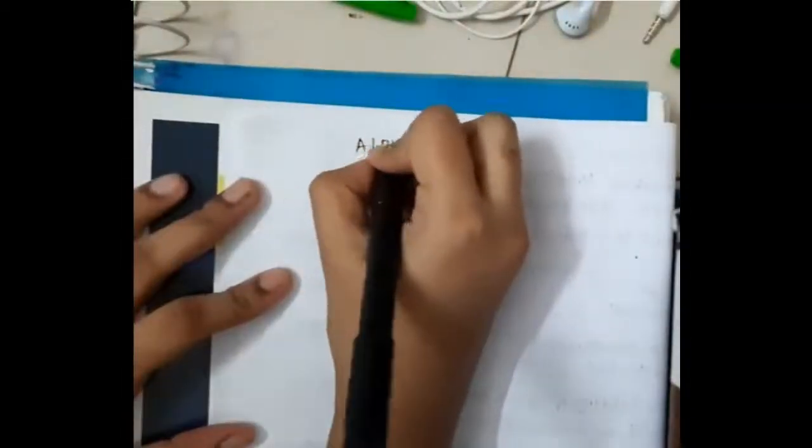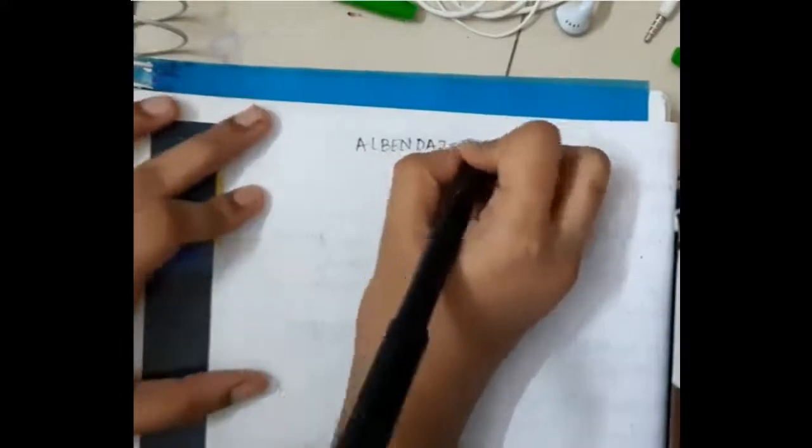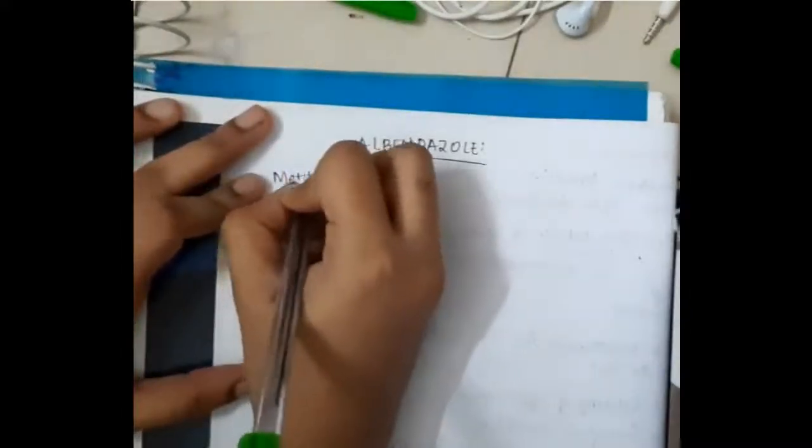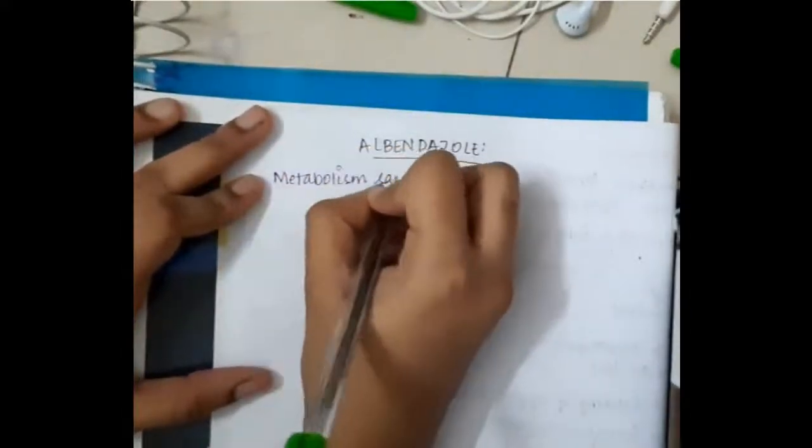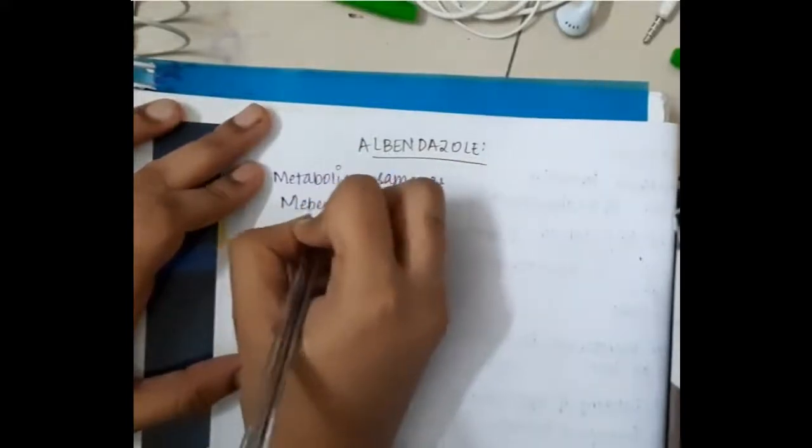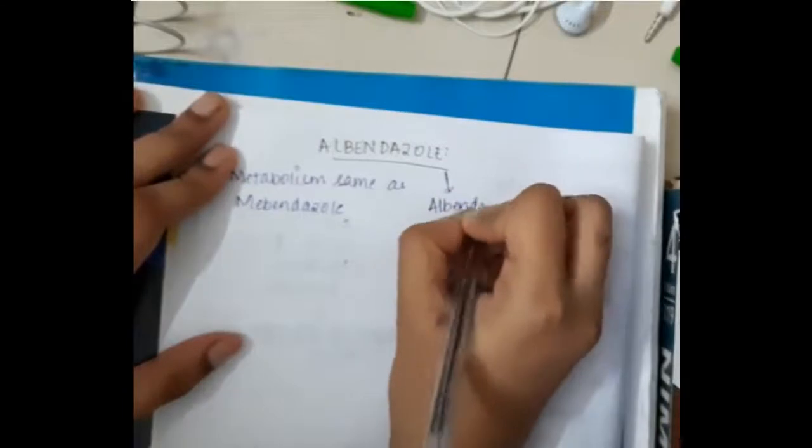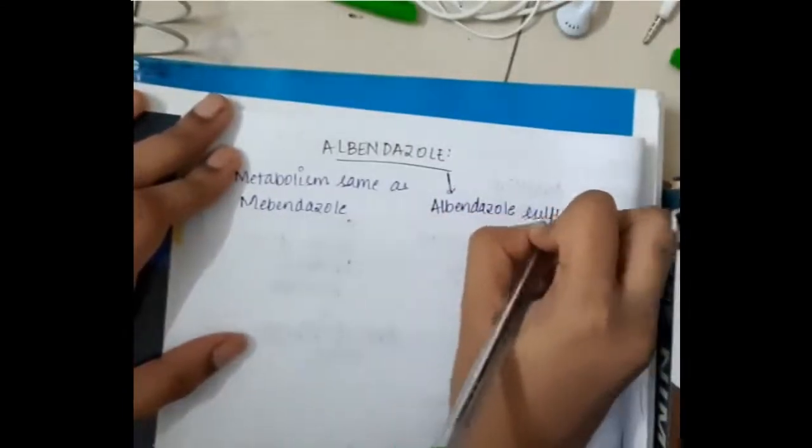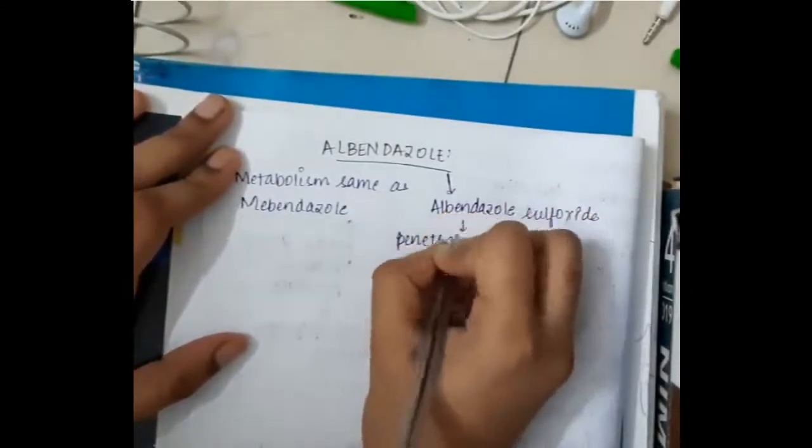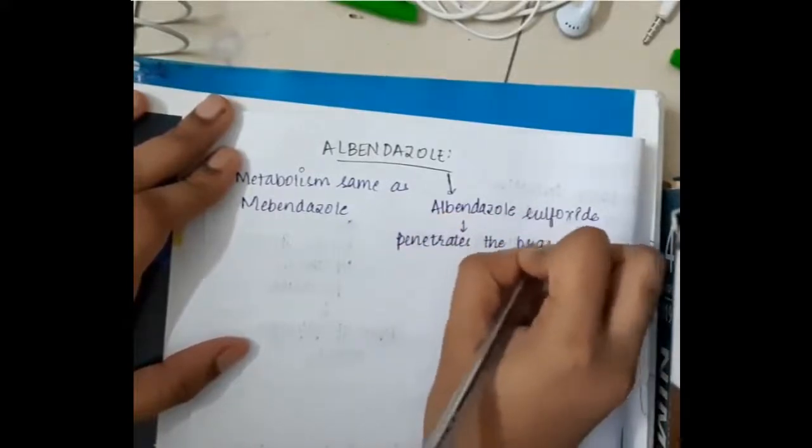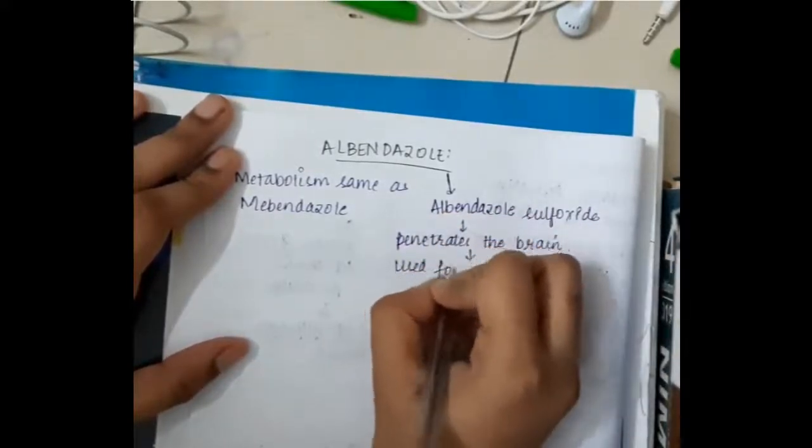Then the next important drug is albendazole. The metabolism of this albendazole is almost the same as mebendazole. This albendazole gets converted into albendazole sulfoxide, and this albendazole sulfoxide can also penetrate the brain. As a result, once it penetrates the brain, it can be used for neurocysticercosis.